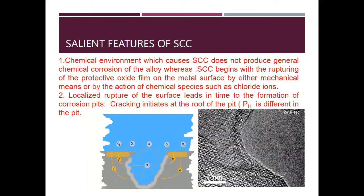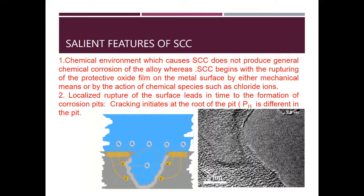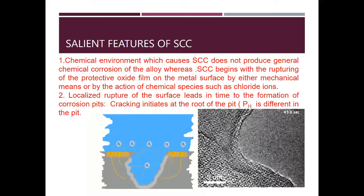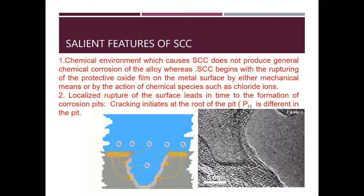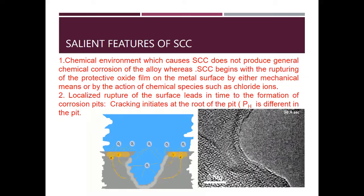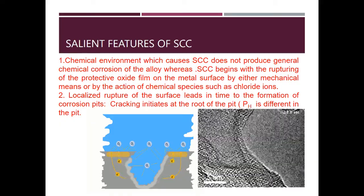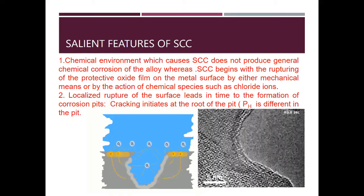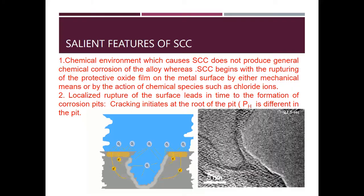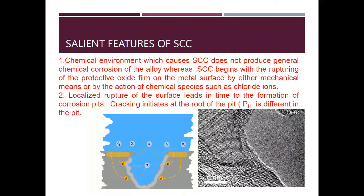Salient features of stress corrosion cracking: The chemical environment which causes stress corrosion cracking does not produce the general chemical corrosion of the alloy. Stress corrosion cracking begins with the rupturing of the protective oxide film on the metal surface by either mechanical means or by the action of chemical species such as chloride ions.